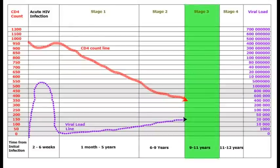After about 9 to 11 years of HIV infection, the CD4 count drops below 350 and the person enters stage 3. HIV viral levels continue to increase.